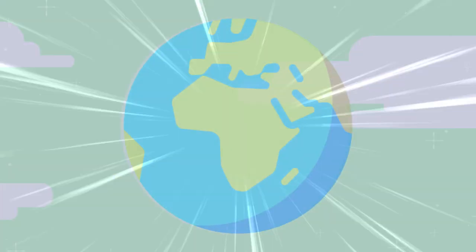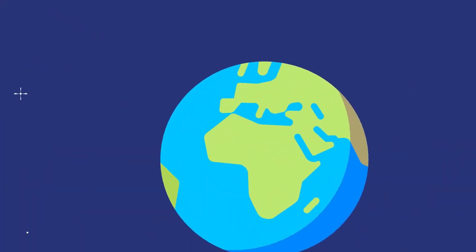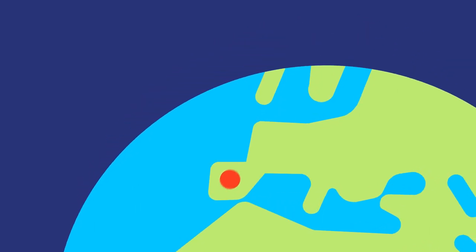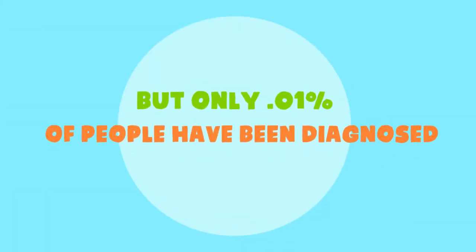As it turns out, von Willebrand disease is the single most common bleeding disorder there is, which could mean that as many as 1% of all people on Earth have it. That's close to the entire population of the United Kingdom. But only 0.01% have been diagnosed.